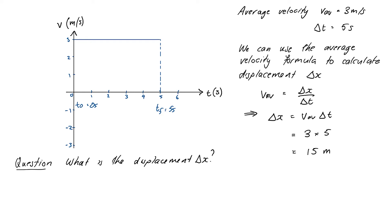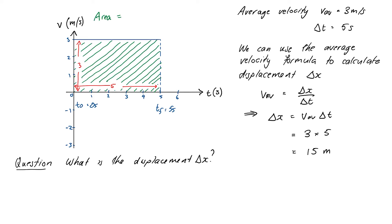Our picture really just looks like a rectangle with sides of three and five. When we multiply two sides of a rectangle together we get the area. So that number 15 — our displacement — is simply the area of that rectangle, base times height. Our displacement is just the area of the rectangle underneath our graph.